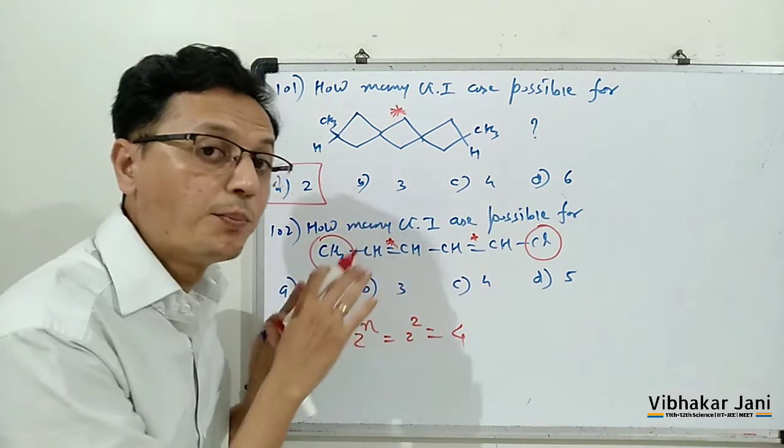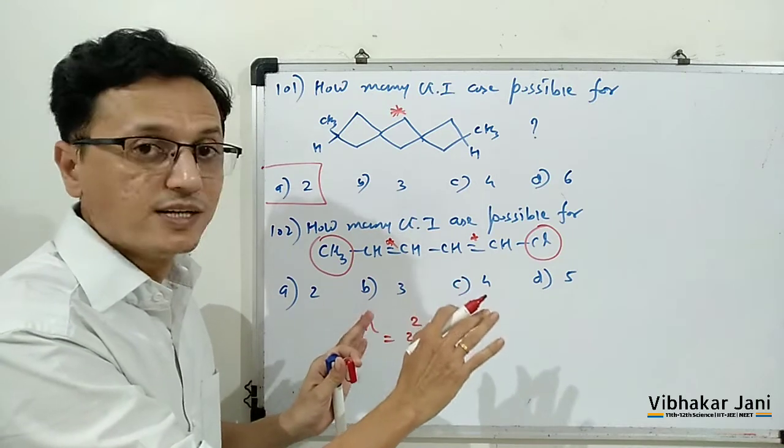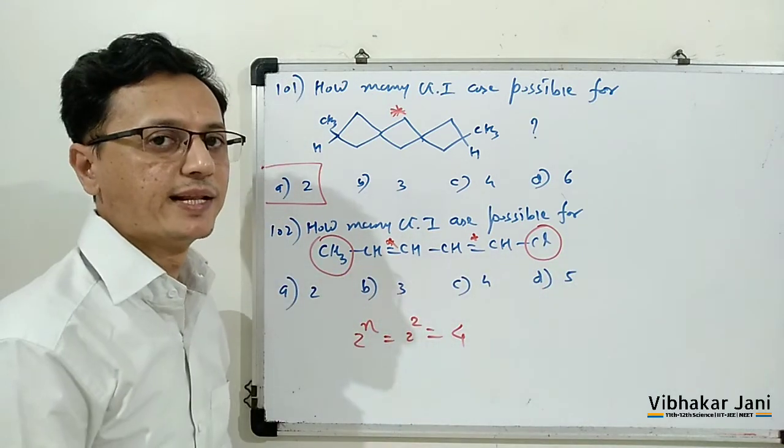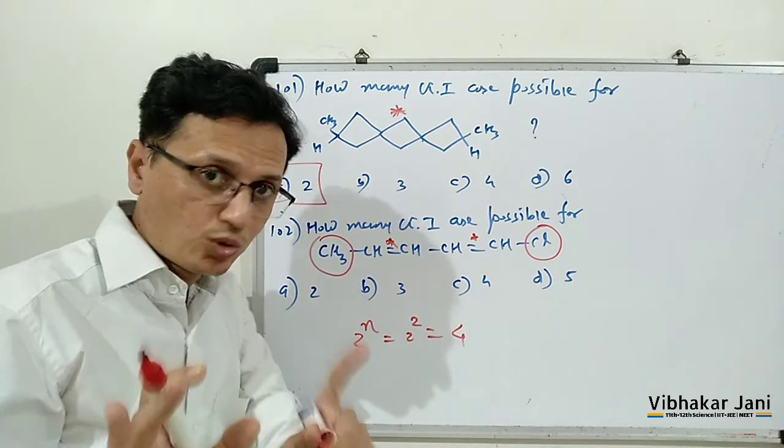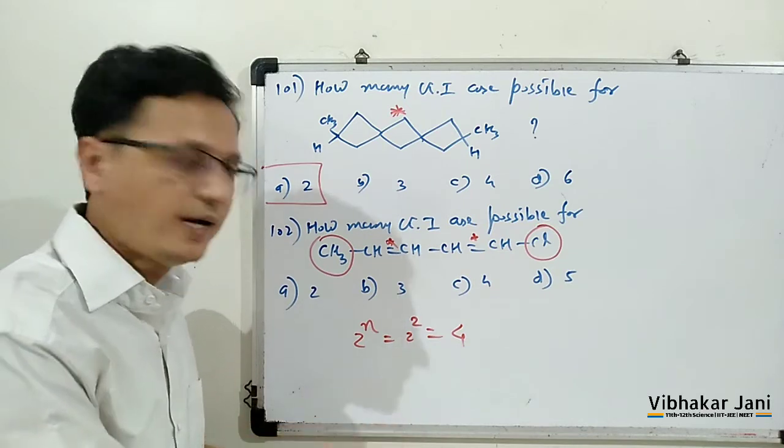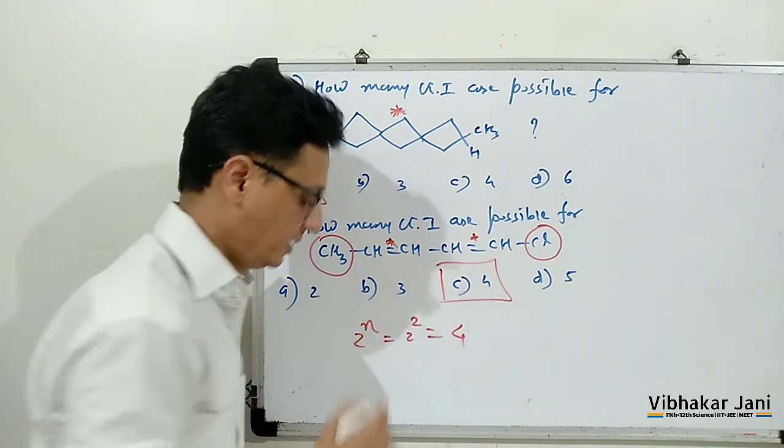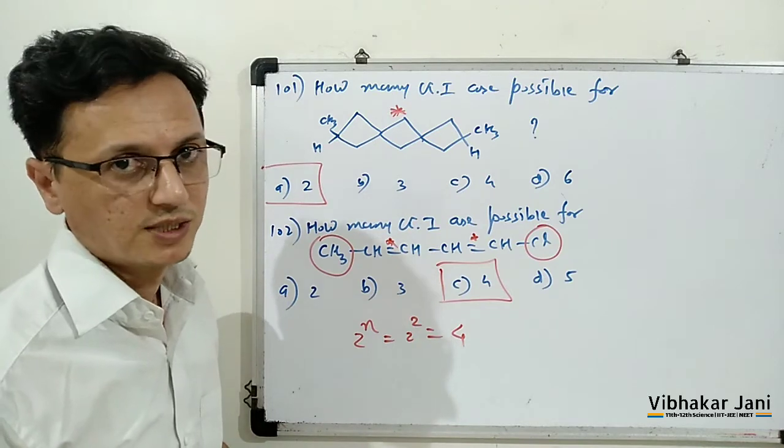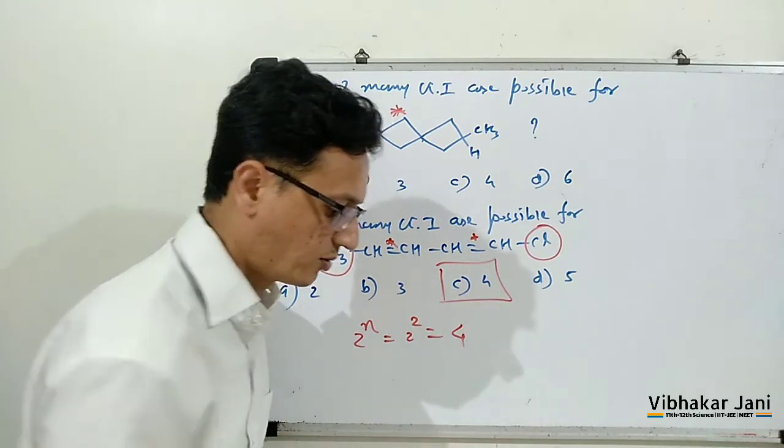If we have a polyene and if this polyene is unsymmetrical with consecutive double bonds, the total number of GI can be calculated using 2 raised to n. 2 raised to 2 is 4, so c will be the correct answer for this question.